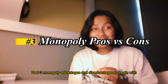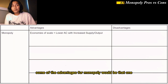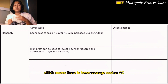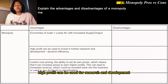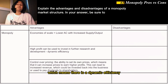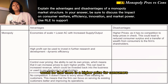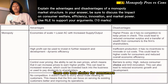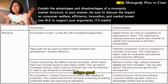Part 3: Monopoly advantages and disadvantages. Some of the advantages for monopoly would be that, one, it achieves economies of scale, which means there is lower average cost or AC from increased output. High profit can be used for research and development, which means there is dynamic efficiency. However, some of the disadvantages would be that there is a higher price for consumers, there is less incentive to cut costs since there is less competition, and there are fewer choices for consumers since they're the only one producing their unique good.